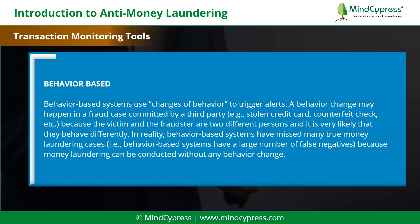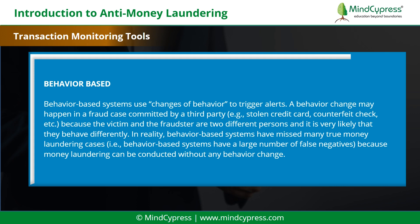Behavior-based systems use changes of behavior to trigger alerts. A behavior change may happen in a fraud case committed by a third party — for example, stolen credit card, counterfeit check, etc. Because the victim and the fraudster are two different persons, it is very likely that they behave differently. In reality, behavior-based systems have missed many true money laundering cases. That is, behavior-based systems have a large number of false negatives because money laundering can be conducted without any behavior change.